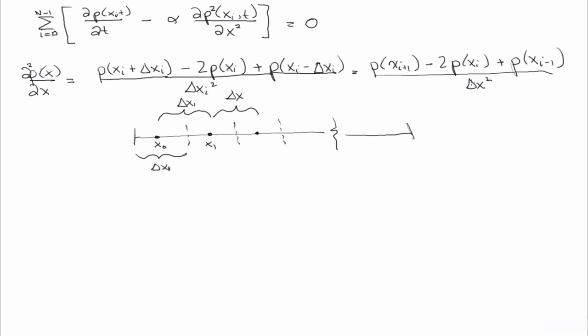And because it gets a little clunky to carry around the functional dependence, we're going to simplify this even a little further. Instead of saying p is a function of xi plus 1, we're going to use the shorthand notation p i plus 1 minus 2pi plus p i minus 1, all over delta x. So these are all equivalent, this is just a shorthand notation. The subscript p of i plus 1 implies p evaluated at the position xi plus 1.